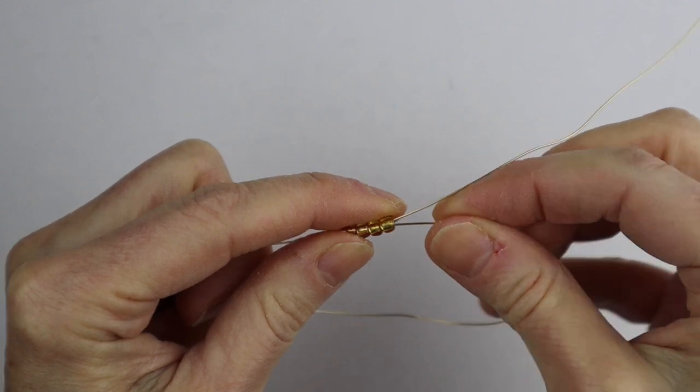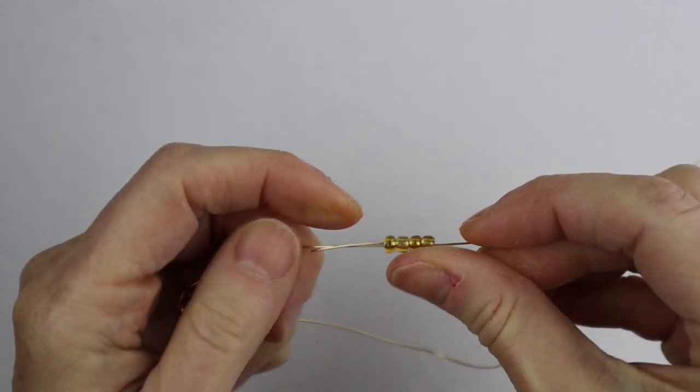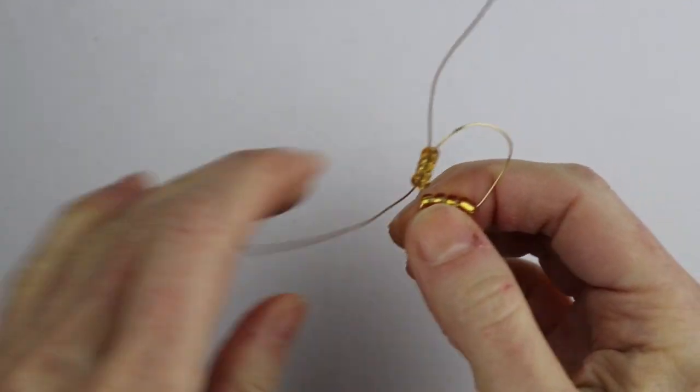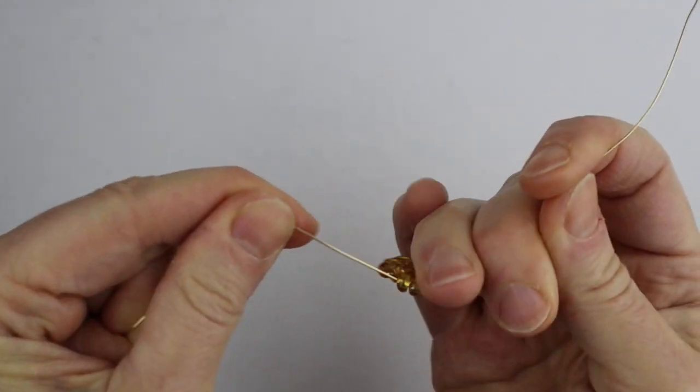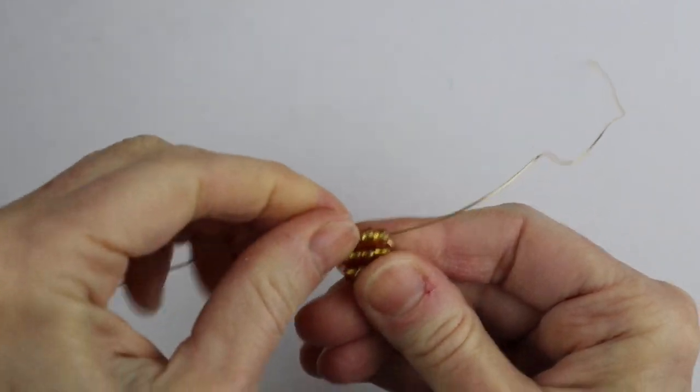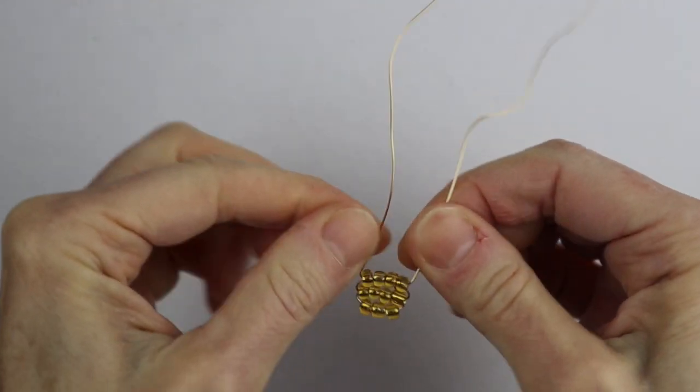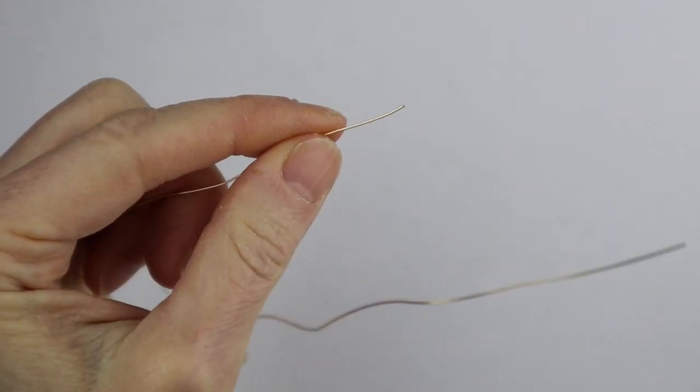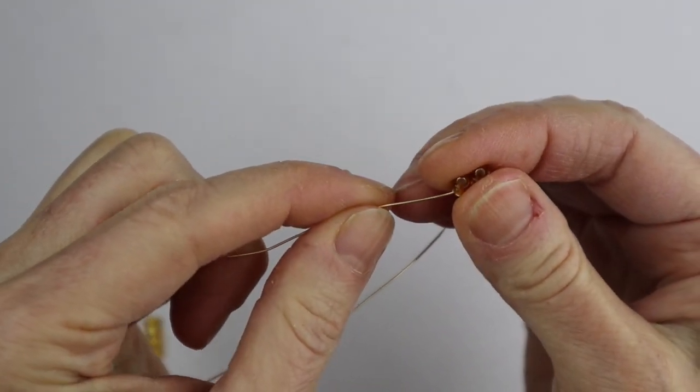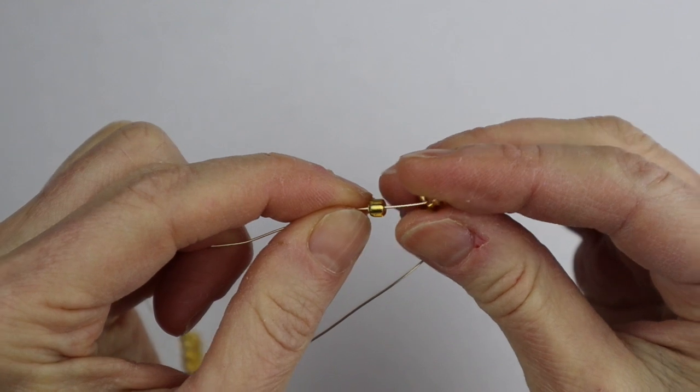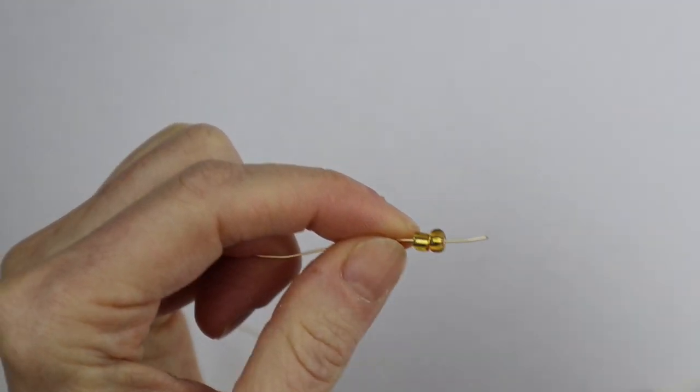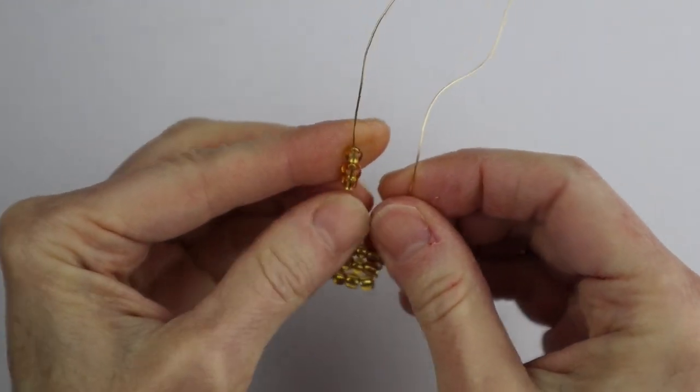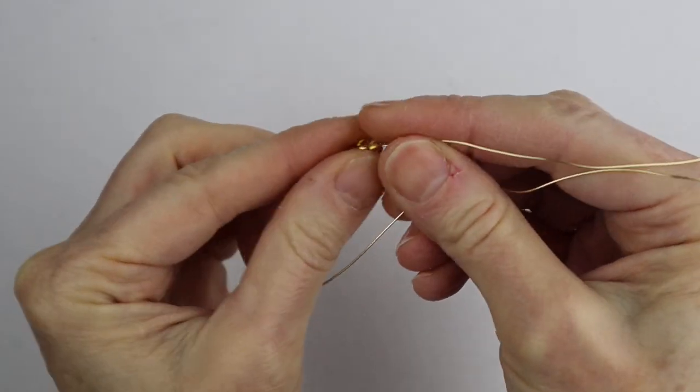Same thing - take the other end and put it back through those four beads and then pull it tight so the wire has gone through both sides. Then lift these ones up and put your last row of three. I don't want this to be too big so I'm just doing four rows of beads.